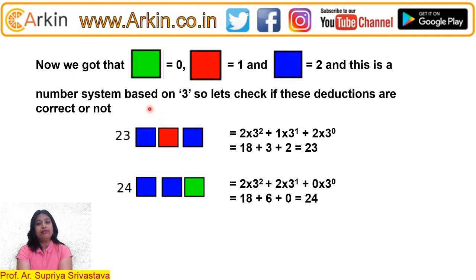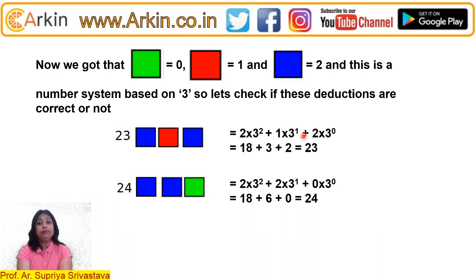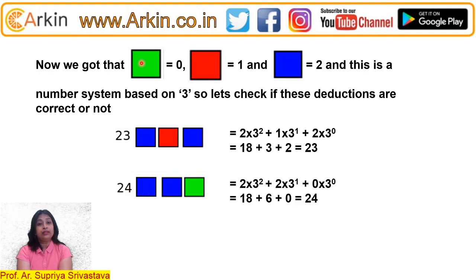Let's quickly verify whether we have correctly deduced the values. One number given in the question paper equals 23. Putting in blue = 2: 2×3² + 1×3¹ + 2×3⁰ = 18 + 3 + 2 = 23. Correct! Another number equals 24: 2×3² + 2×3¹ + 0 = 18 + 6 + 0 = 24. Correct! So green = 0, red = 1, and blue = 2, with the number system based on 3.